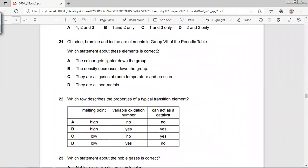Chlorine, bromine, and iodine are elements in Group 7. Which statement about these elements is correct? The color gets lighter down the group? No, the color gets darker down the group. The density decreases down the group? We know that mass number increases down the group, so density cannot decrease.